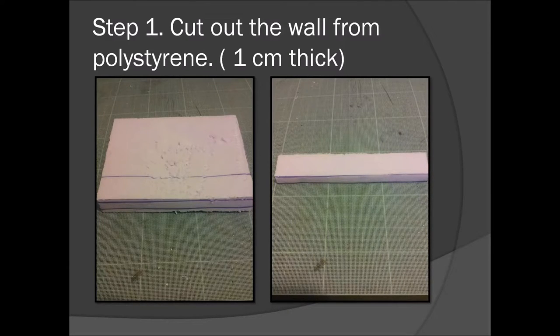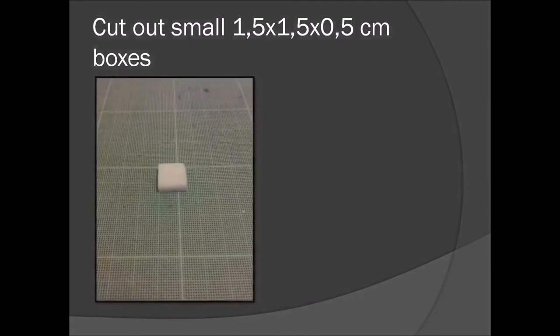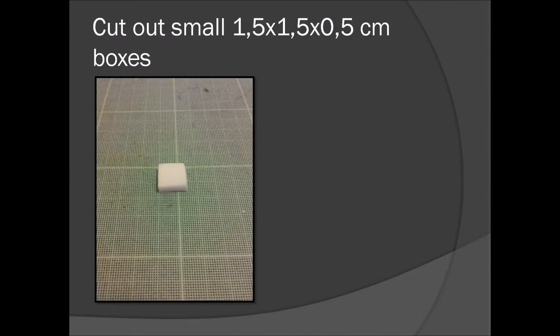The height is the same, three centimeters. When you cut out the wall, then cut out small boxes of polystyrene. This should be about one and a half times one and a half times 0.5 centimeters.